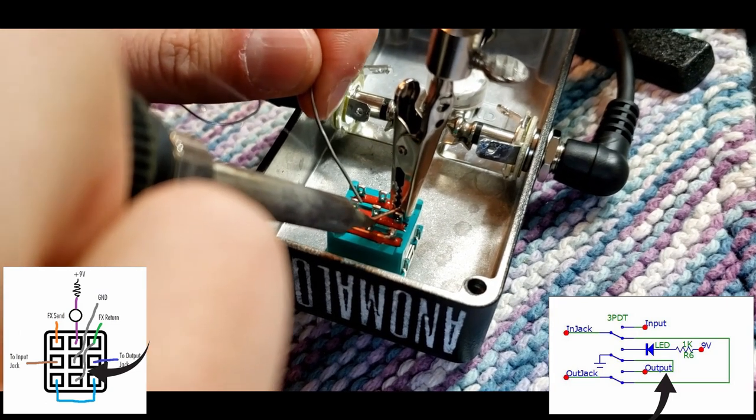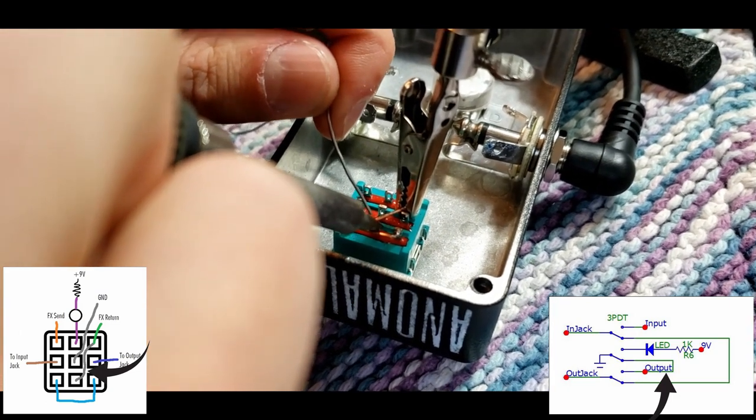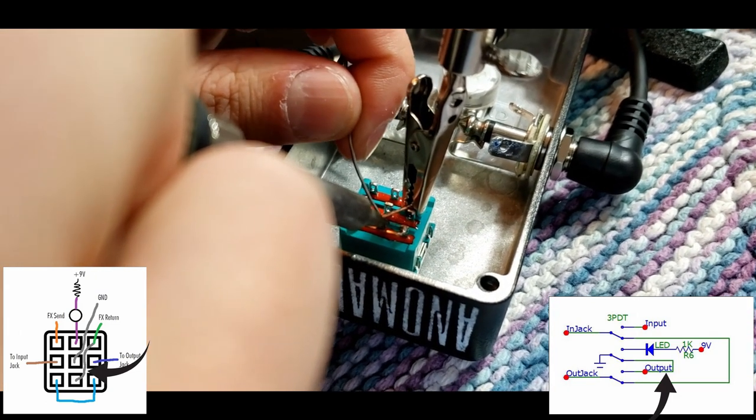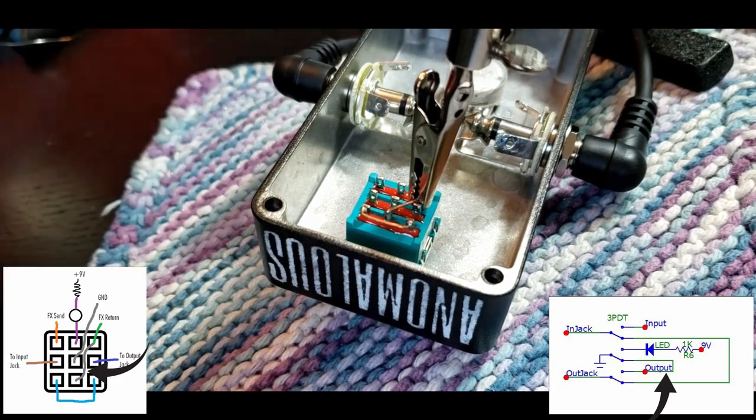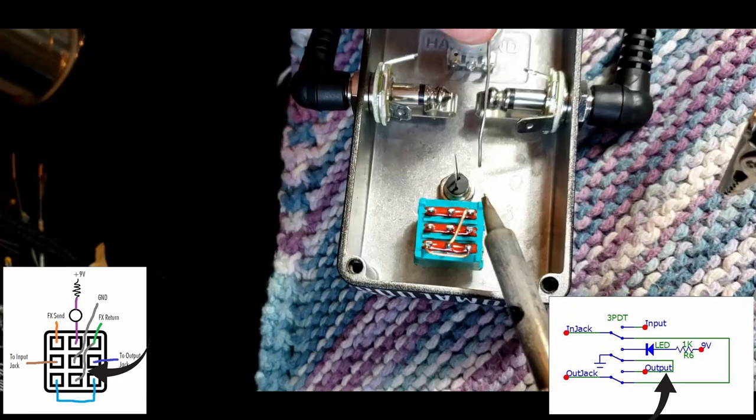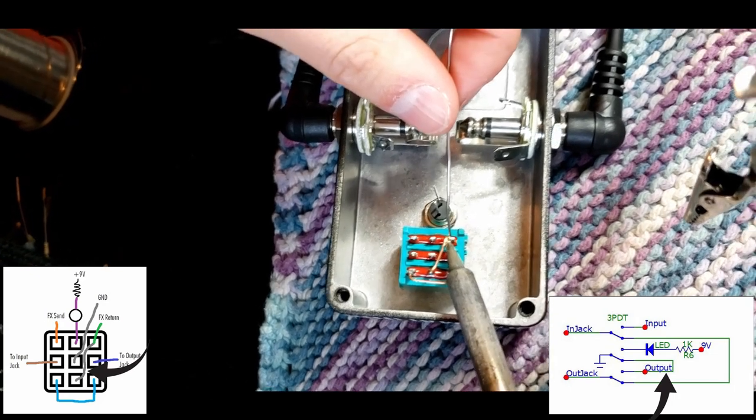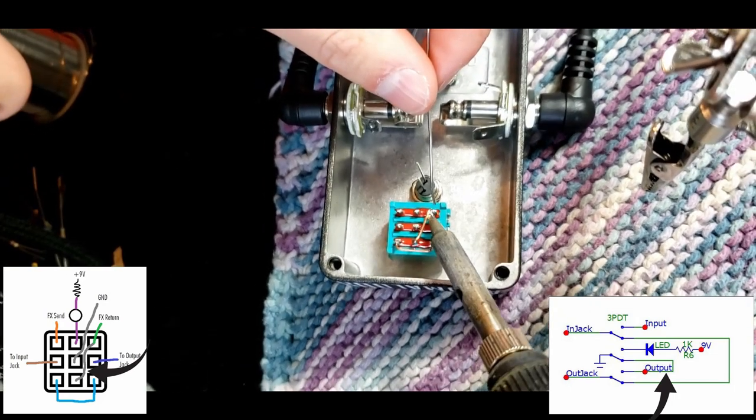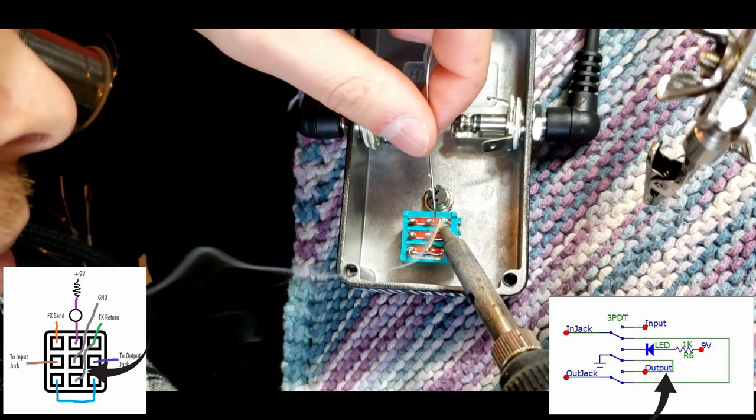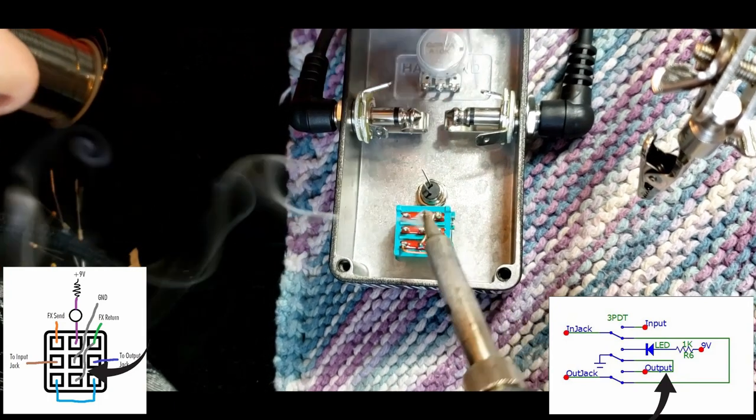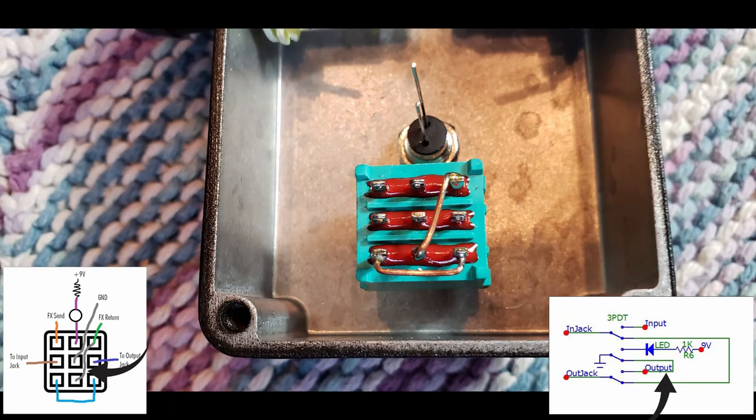So now we're on to W2. We're going to solder this to the bottom middle terminal on the footswitch up to the top right. W2 is the jumper wire that will ground the output of the effects circuit when the footswitch is off.